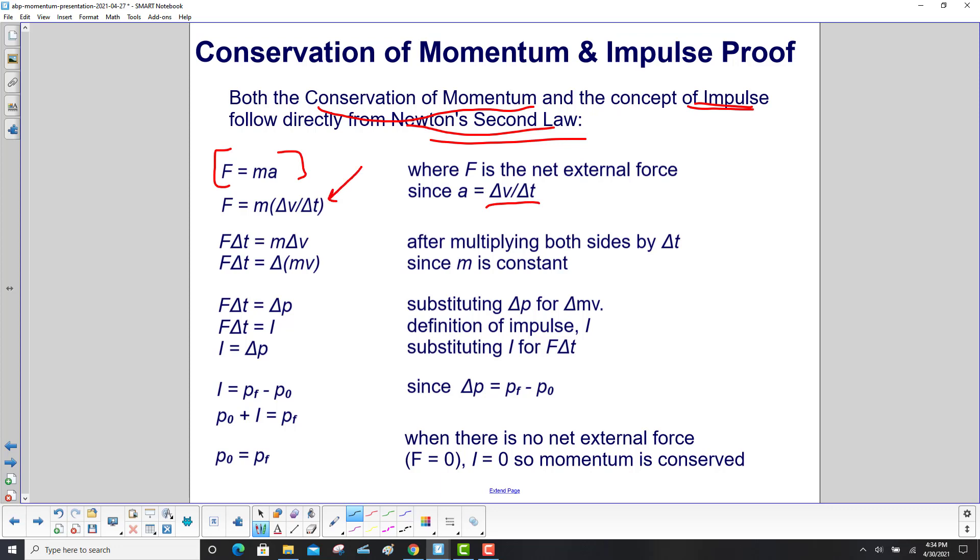So we substitute that in, and then we multiply both sides by delta t, and we get F delta t equals m delta v. Since m is a constant, we can bring it within the parentheses. So F delta t is delta mv. And what's mv? That's momentum. So here's F delta t equals delta p, and earlier we defined impulse as F delta t.